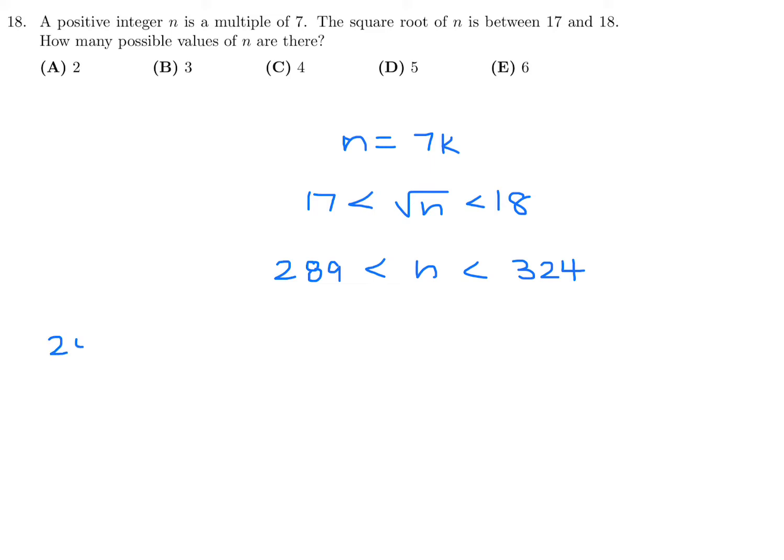Let's put 289 here and 324 is our other boundary. The first multiple of 7 that's greater than 289 is 294, because that is 42 times 7. And then you just keep adding 7: 301, 308, 315, 322, and then I will be beyond my boundary. So 1, 2, 3, 4, 5. 5 is the answer to number 18. That would be D.